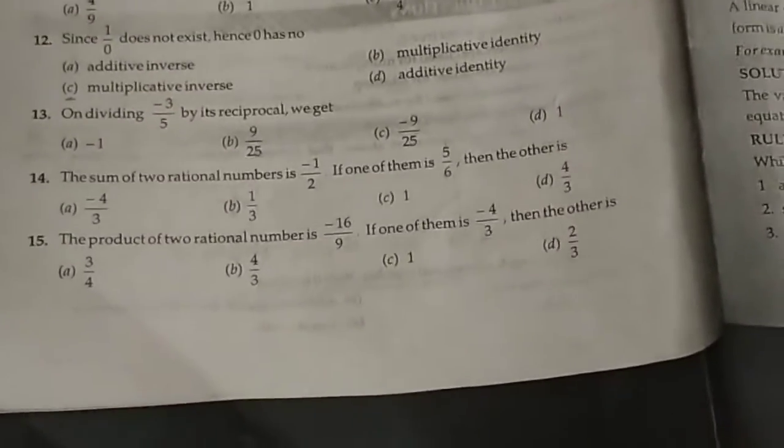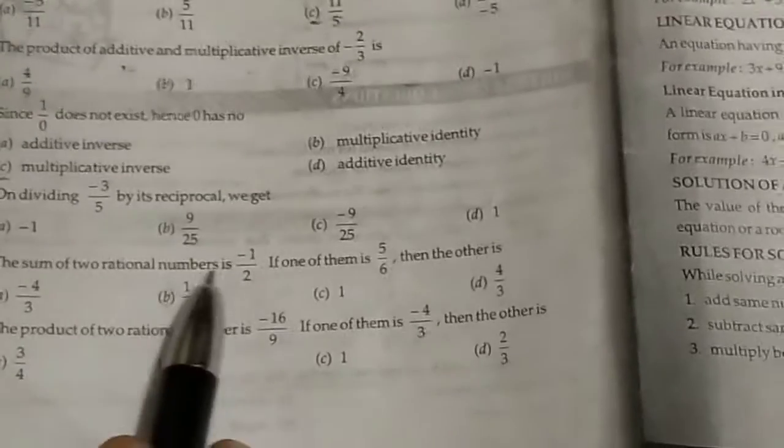Question number thirteen, on dividing minus three by five by its reciprocal. Reciprocal is five by three. Divide both. So this is nine by twenty five.